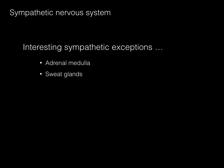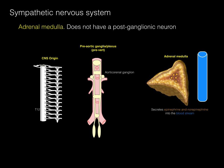There are two interesting sympathetic exceptions. First, the adrenal gland: it does not have a postganglionic neuron. Its preganglionic origin is primarily from T12, but can be L1 or L2, traveling via the least splanchnic nerve. It passes through the pre-aortic ganglia without synapsing, goes through the aortico-renal ganglia, follows the renal arteries, and synapses directly in the adrenal medulla. The adrenal medulla — derived from neural crest cells — functions as the postganglionic neuron, but instead of having an axon, it secretes epinephrine and norepinephrine directly into the bloodstream.